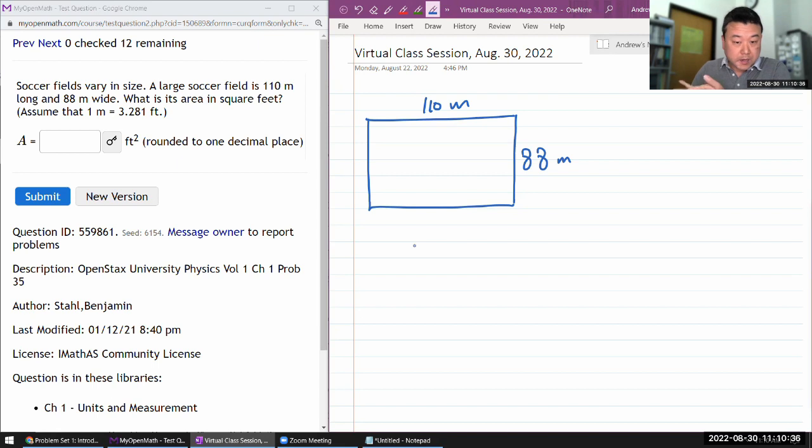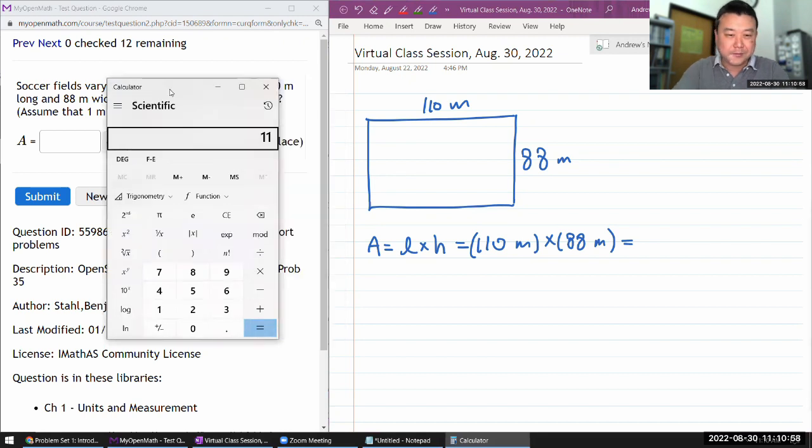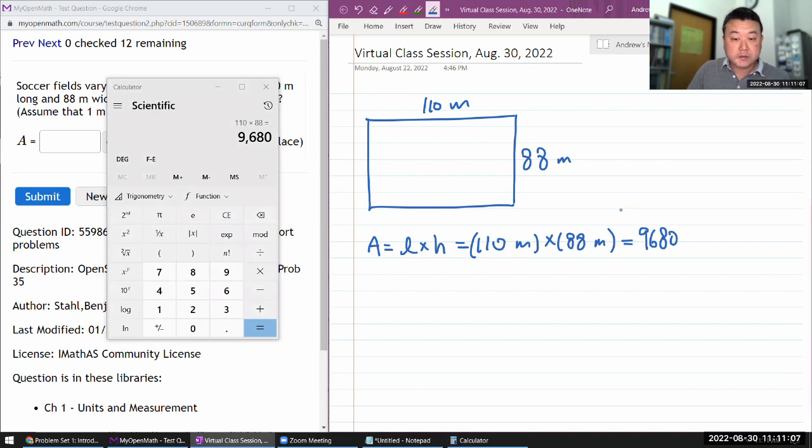I can use the formula for area. Area is length times height, or 110 meters times 88 meters. Let me just use calculator. That's a little too complicated to do in my head. So 9680 in terms of numbers. In physics classes you will see me emphasize units quite a bit. Units are really important in physics. That's one thing that distinguishes your physics class from your math class. Your physics instructors care more about units than your math instructors did.